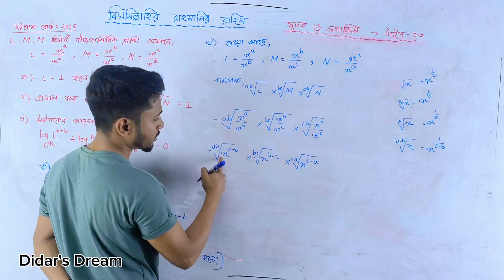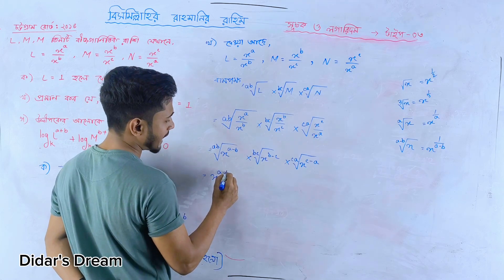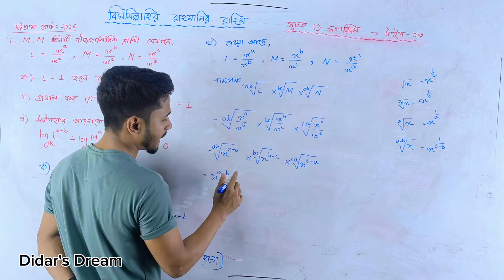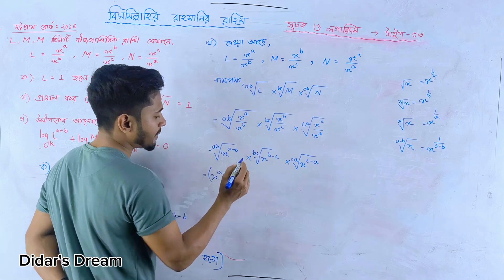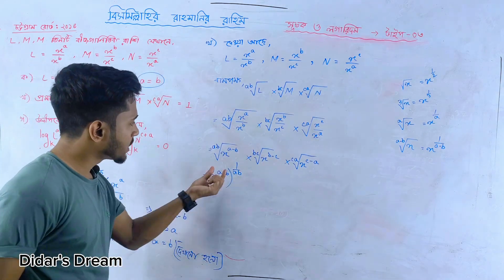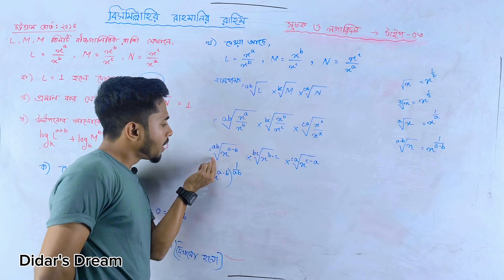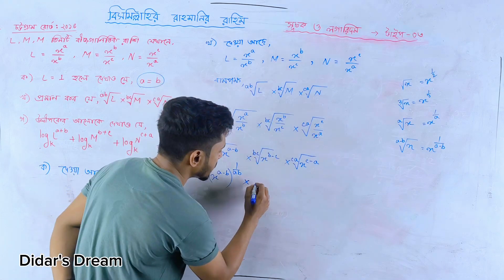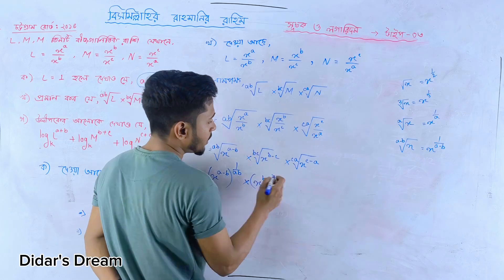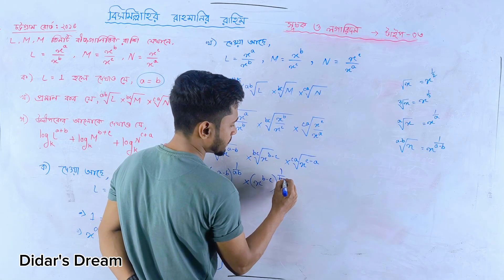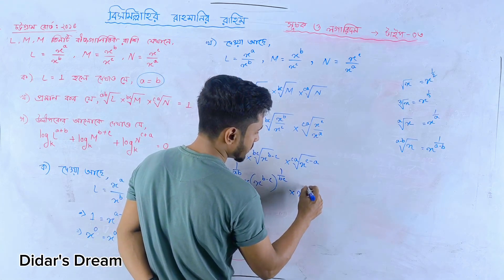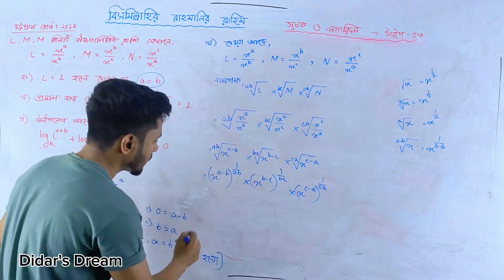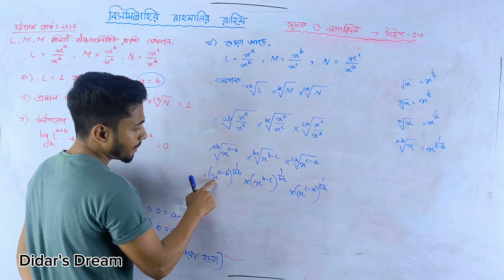Simply, we will do the same work: x to the power (a minus b). Root root. 1 by 1 by ab. This is clear. ab root, 1 by ab. What you tell them — x to the power (b minus c). Root bc, 1 by bc. x to the power c-a, root 1 by ca. Clear?